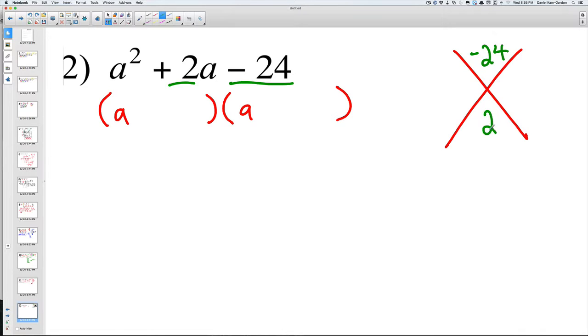So we draw our cross and we have this number here, negative 24, so that's going to go on top, negative 24. And then the middle number, the 2, is going to go on the bottom.